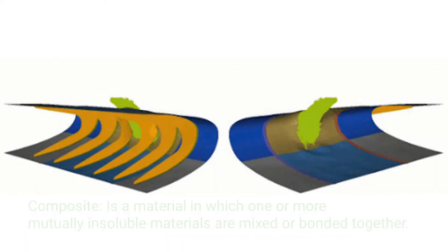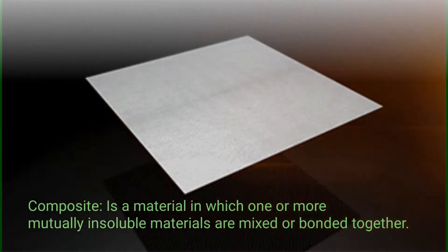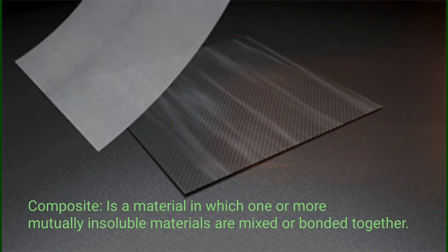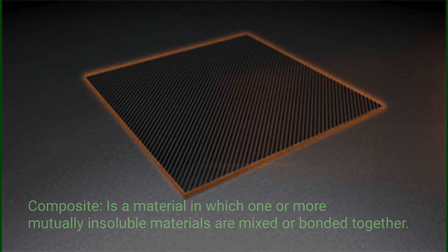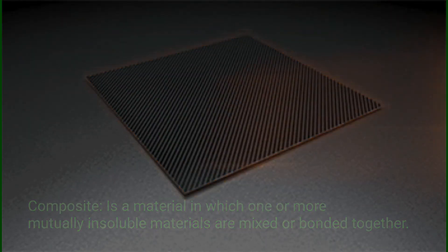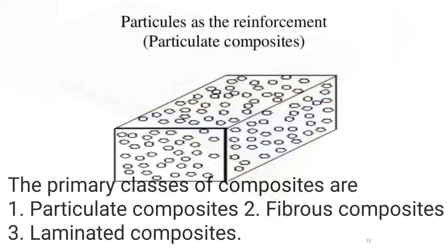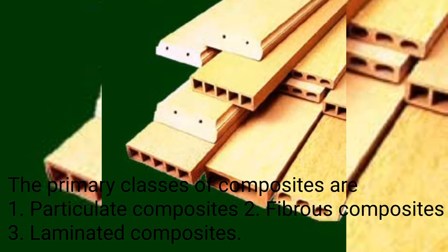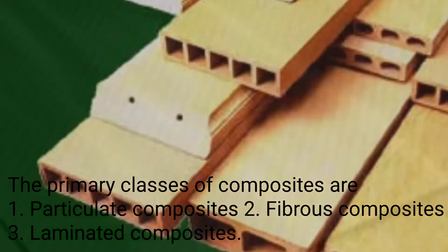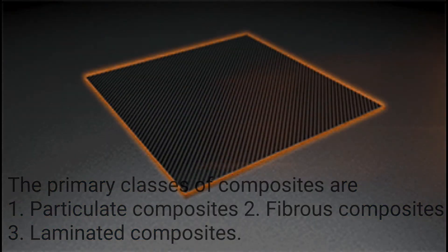Composites: a composite is a material in which one or more mutually insoluble materials are mixed or bonded together. The primary classes of composites are: one, particulate composites; two, fibrous composites; and three, laminated composites.